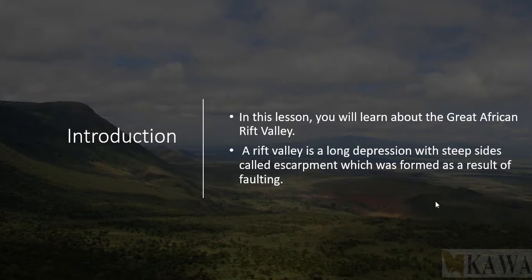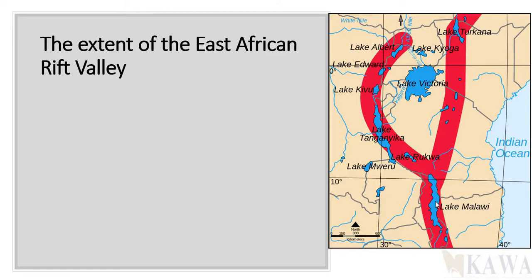The rift valley is an elongated depression. The one in Africa stretches all the way from the Red Sea up to Port Beira in Mozambique. It is elongated and as wide as 300 kilometers. Now let's look at the extent of the African rift valley on this map — you can see the areas it covers. Look at the atlas and name the lakes. Remember, this is the map of East Africa; try to trace and draw it on your own.